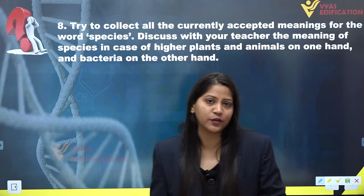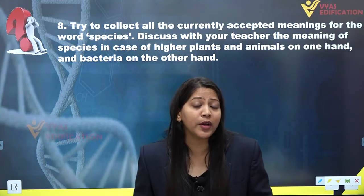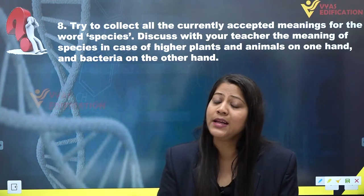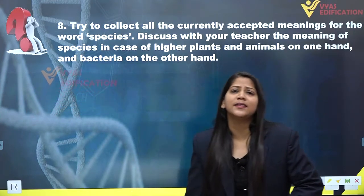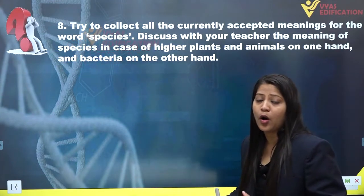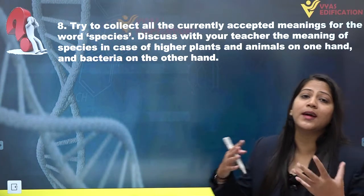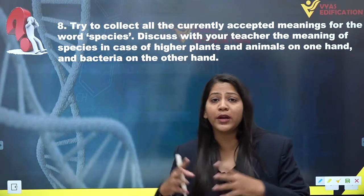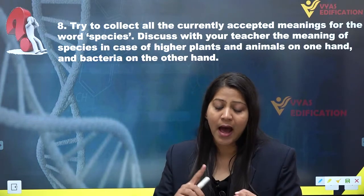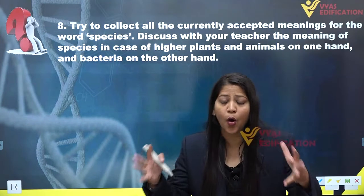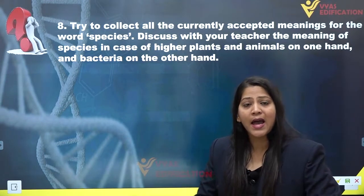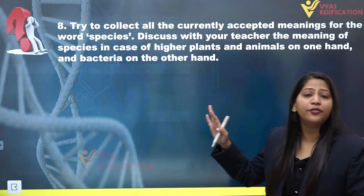A species is a group of organisms with similar structural and functional characteristics that can breed in nature with each other only and can have close ancestral relations. This whole group of organisms which have close ancestry, can breed among themselves, and have similar structures and functions is known as species.